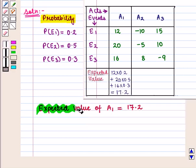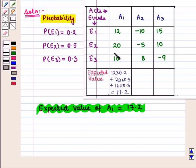Similarly expected value of act A2 will be equal to minus 10 into 0.2 plus minus 5 into 0.5 plus 8 into 0.3, and this is equal to minus 2.1.